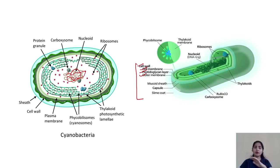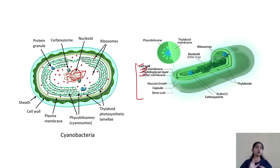Now we will talk about another feature of cyanobacteria. The cyanobacteria cell is divided into two parts because they have photosynthetic pigments. The photosynthetic pigments are located in specific regions of the cell.